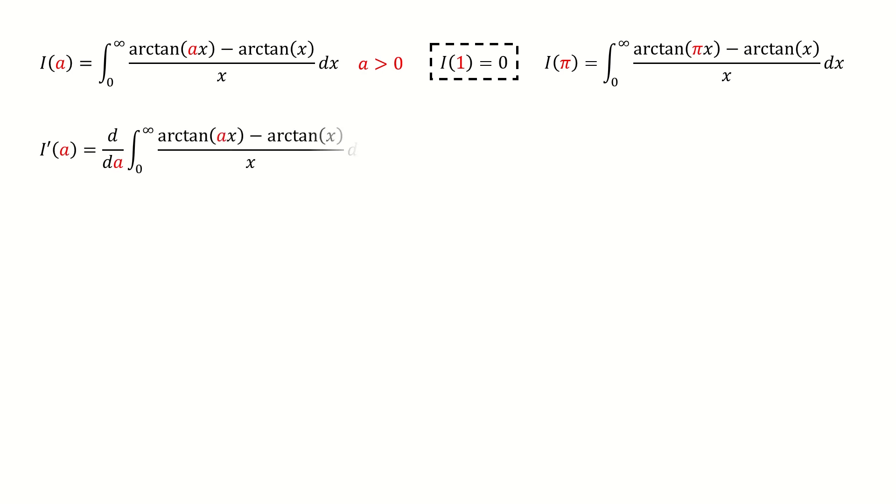And then we apply Feynman's trick to do the derivative. Note here, this derivative is with respect to the variable a, so we treat x as a constant. Then the second term vanishes after we take the derivative.